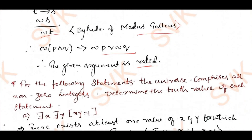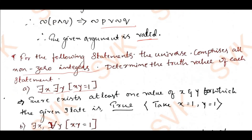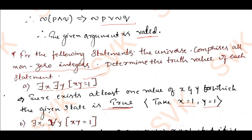Moving to the last problem of module 1: the universe comprises all non-zero integers. Determine the truth value of each statement. First: there exist x, there exist y such that xy = 1. This is true, since we can find at least one value satisfying the condition — for example x = 1 and y = 1 gives 1 × 1 = 1. Therefore the truth value is true.